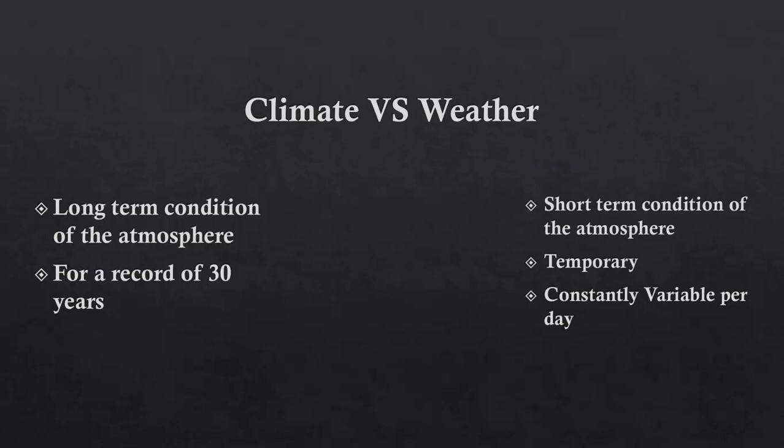Climate is basically a record of 30 years. For example, it is obvious that weather in the seasons is very constant — in winter there is snow, in summer there are monsoons — whereas weather is temporary and constantly variable per day.